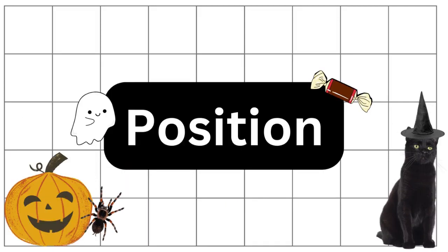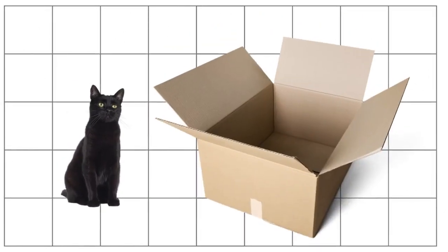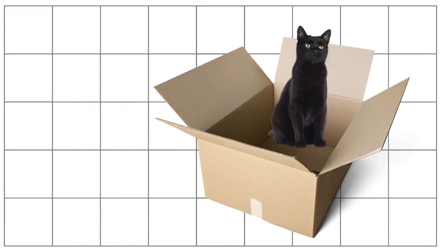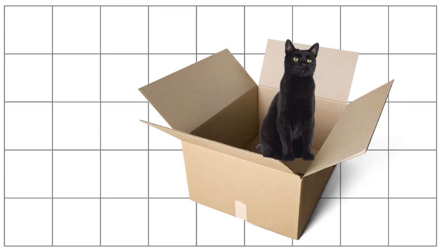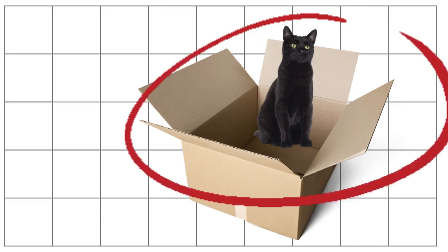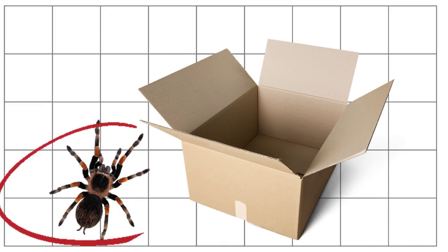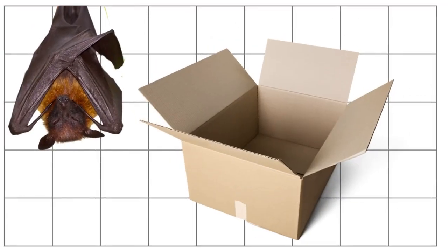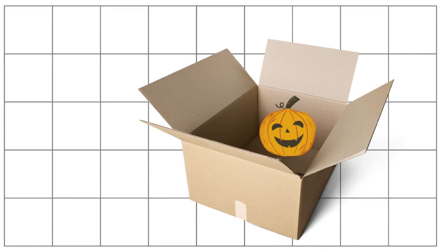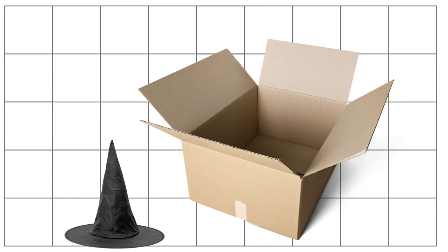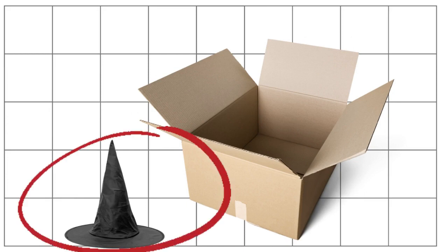Position means where something is, compared to another object. The cat is outside of the box. The cat is inside of the box. What is the position of the cat now? Outside or inside of the box? The cat is inside. How about the spider? The spider is outside of the box. How about the bat? Outside. Where is pumpkin? Inside of the box. Where is the hat? Is it in or out of the box? It is outside of the box.